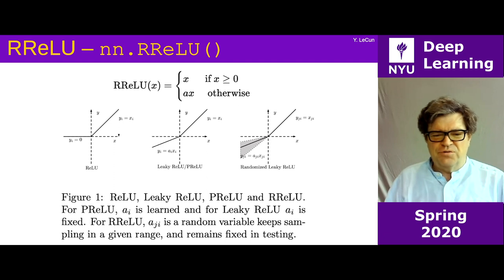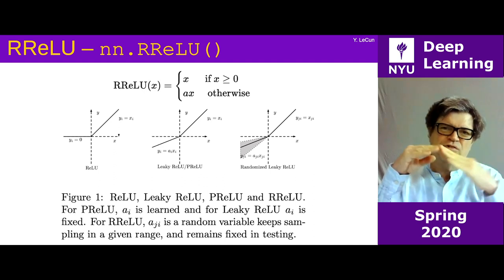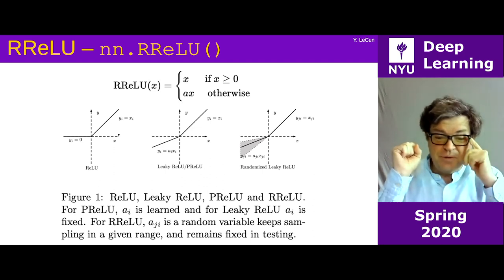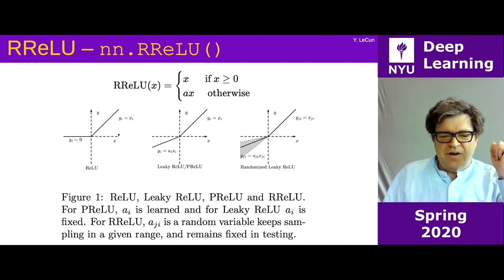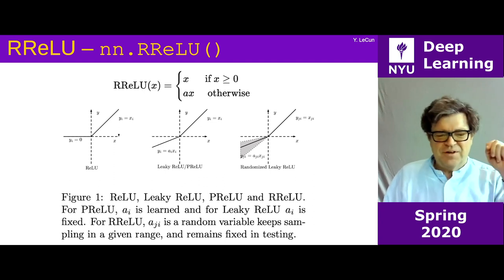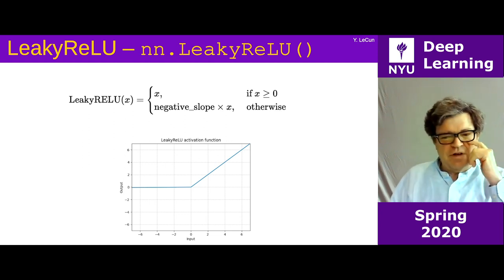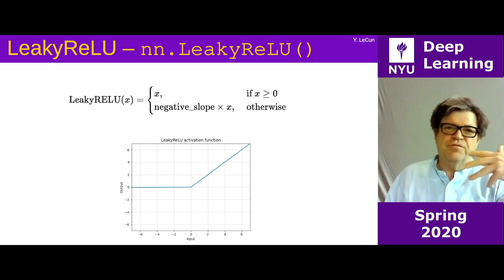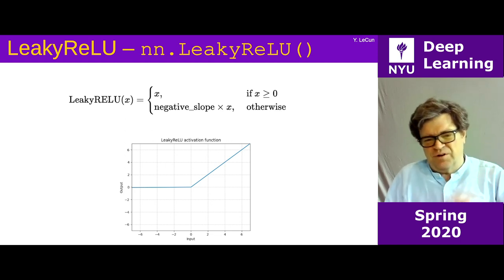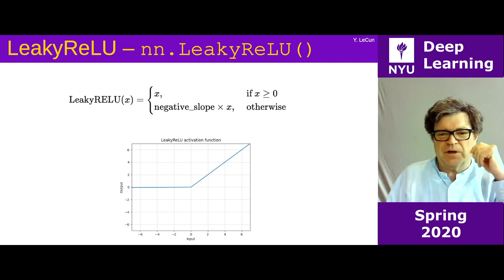There are lots of variations of ReLU: versions where the bottom part is not constant and set to zero but can change — either with a positive slope, forced to have a negative slope, or sometimes random, as in the randomized leaky ReLU. They have nice names like leaky ReLU, PReLU, RReLU, etc. Leaky ReLU allows the bottom part to have a slight negative slope, preventing the dying ReLU problem where a unit gets no gradient.